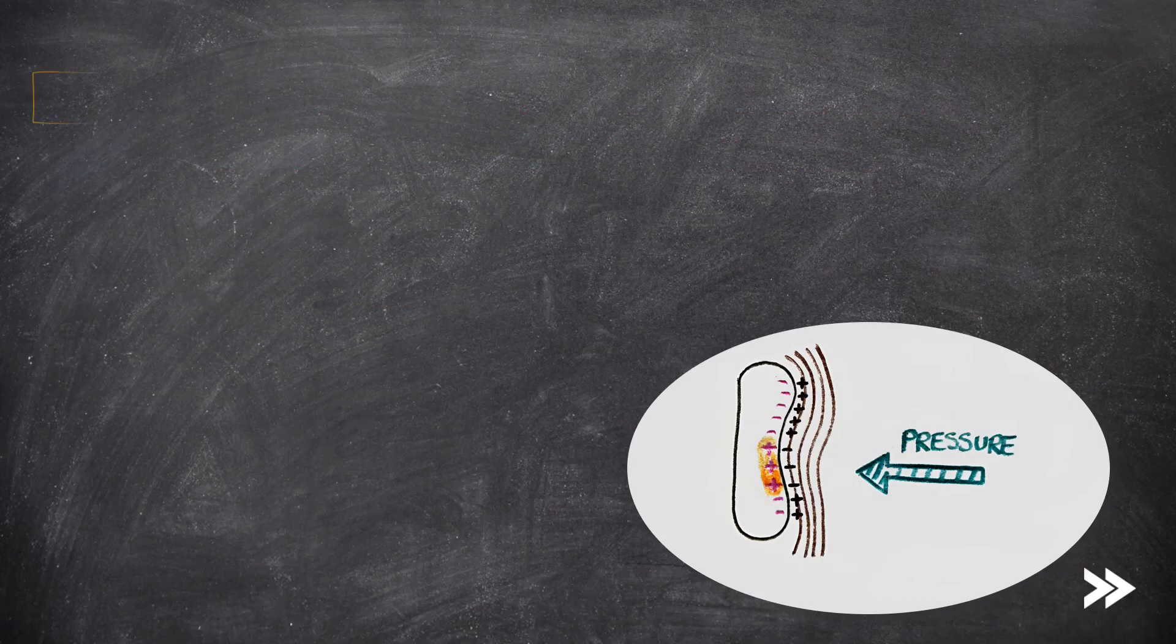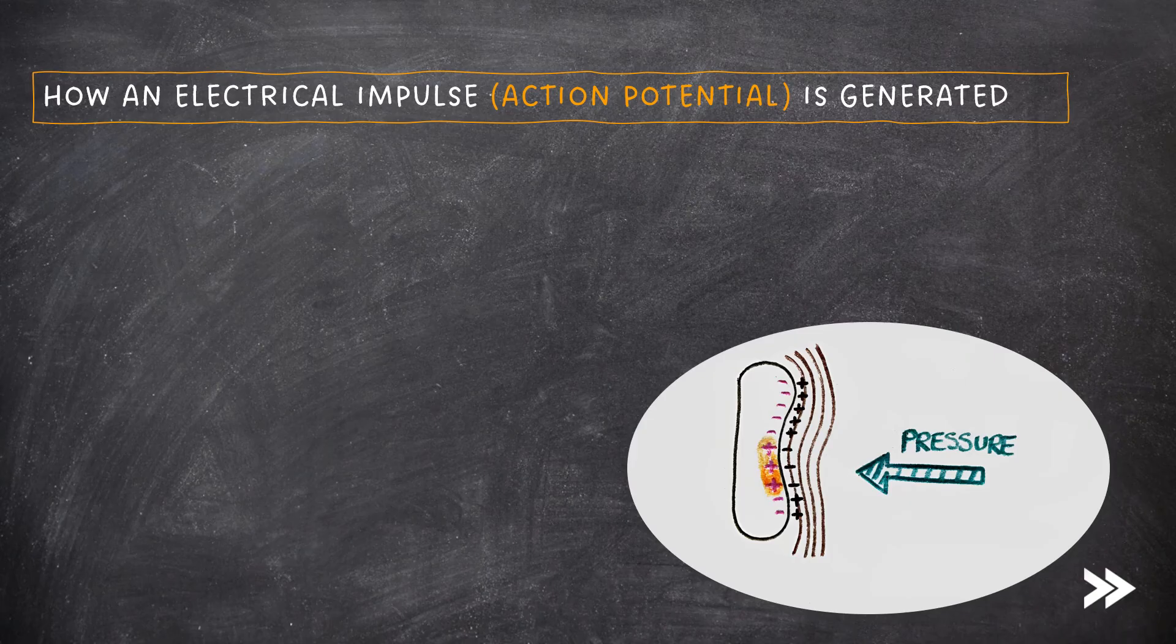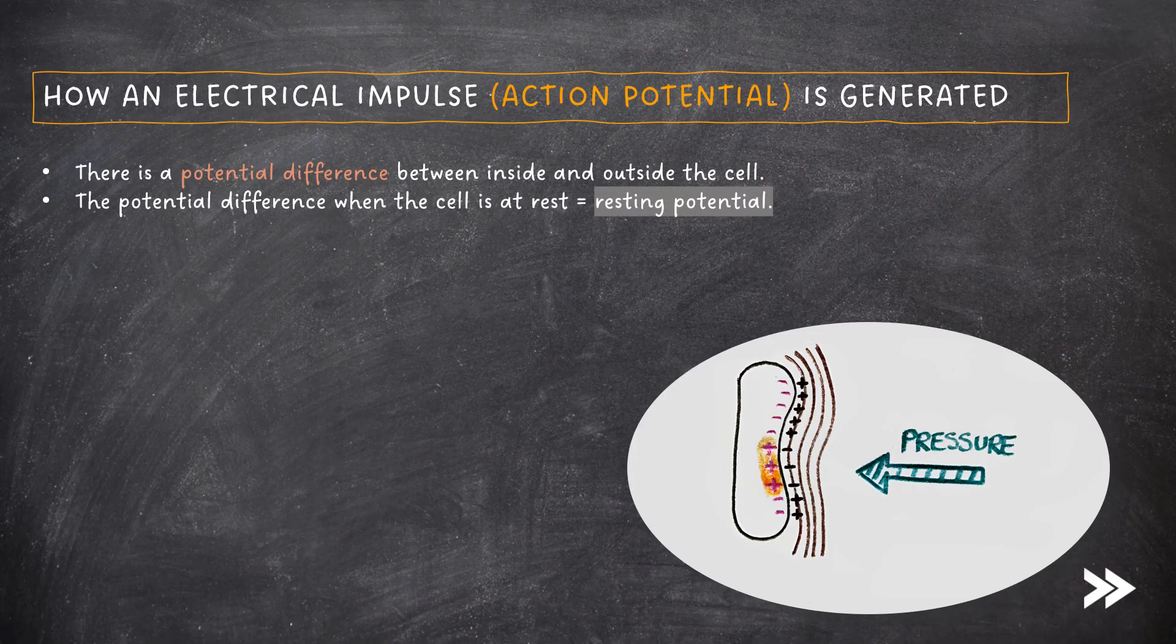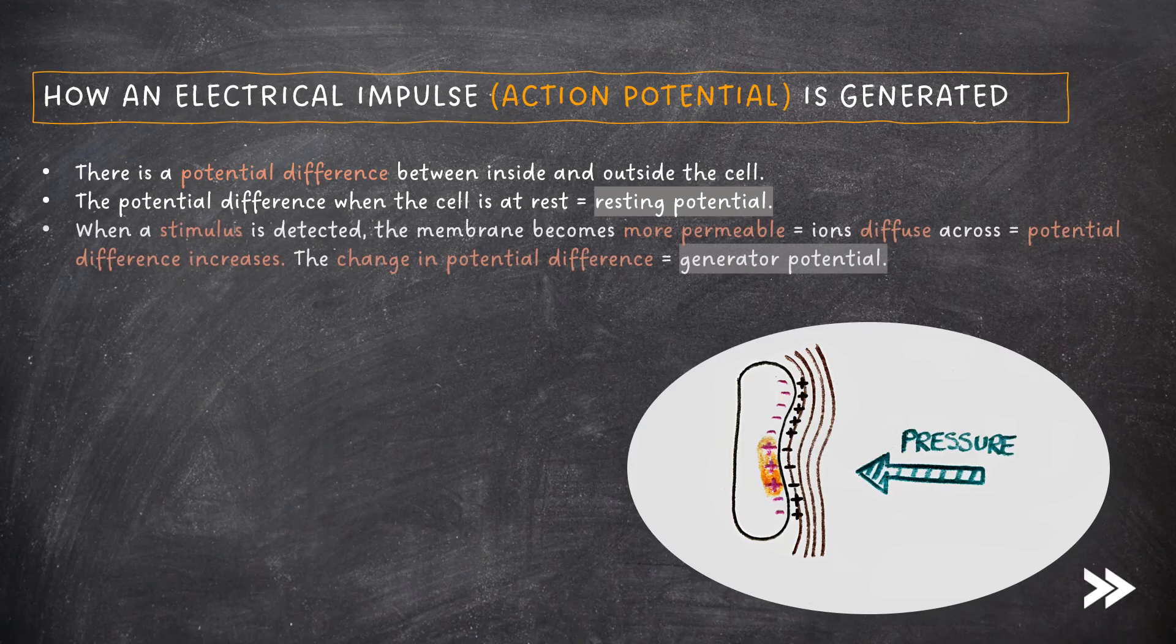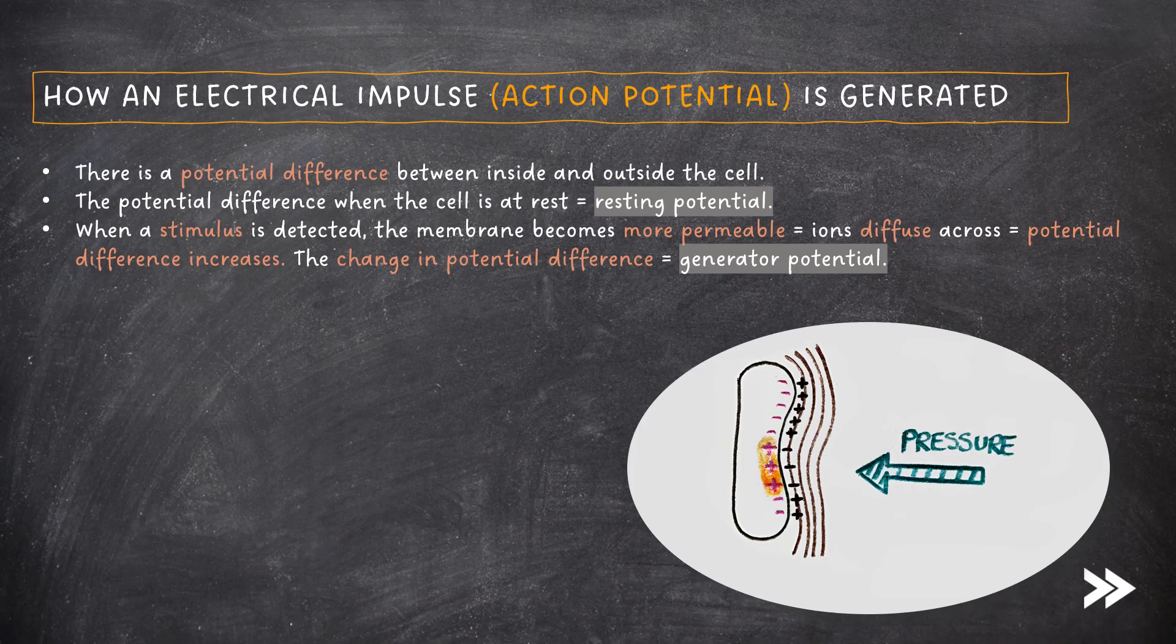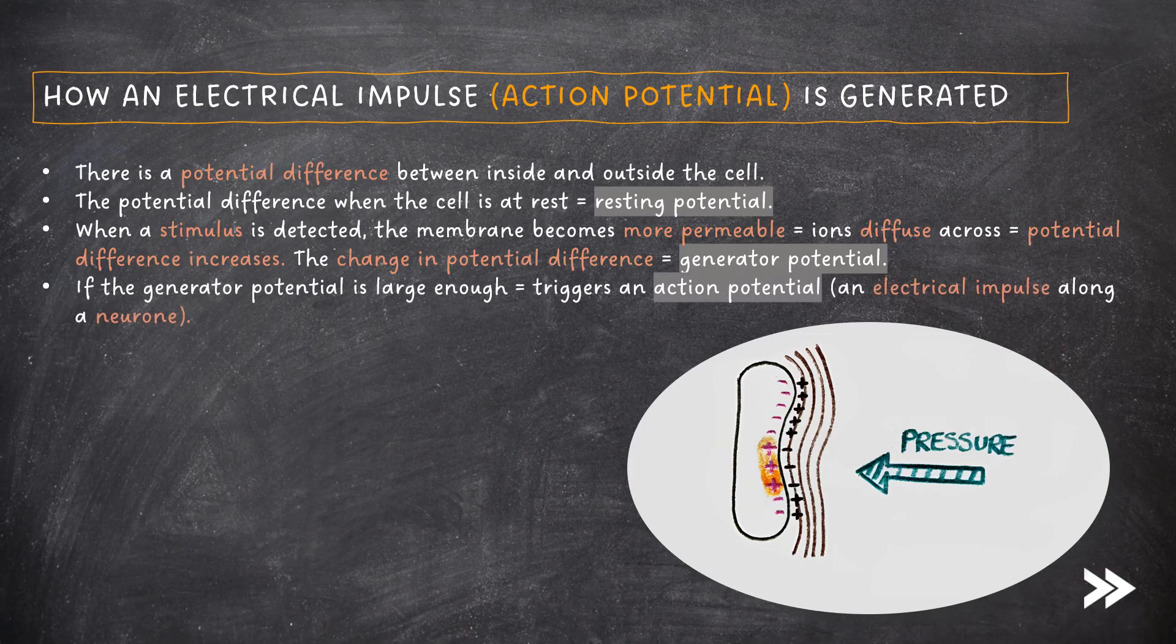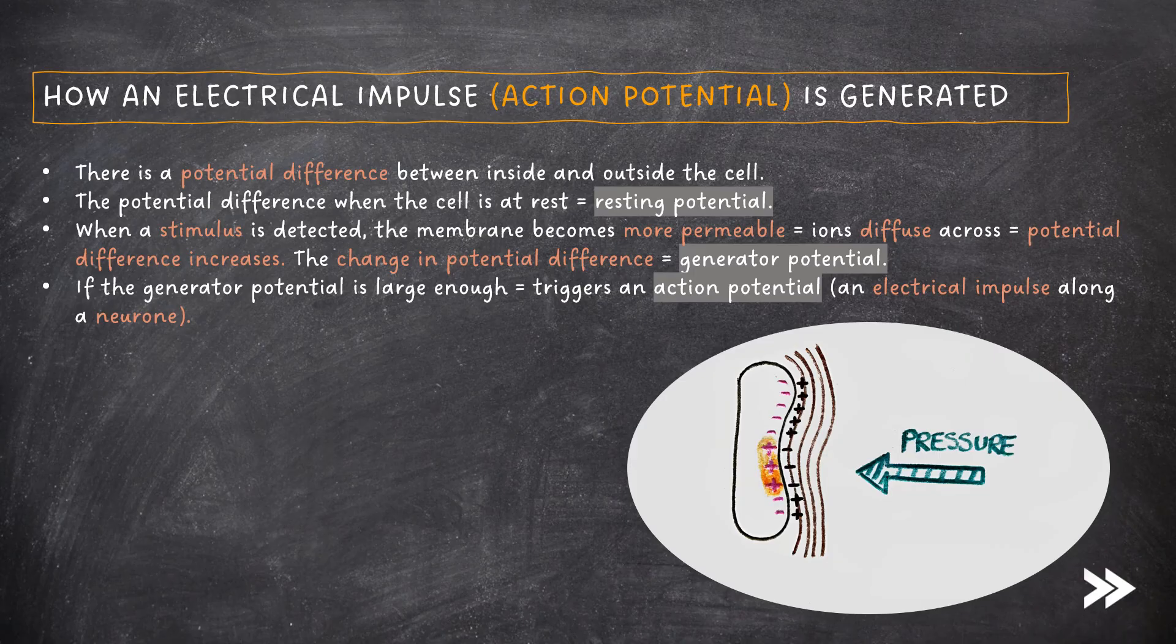So how is an electrical impulse, which is also known as an action potential, actually generated? There is a potential difference between inside and outside the cell. The potential difference when the cell is at rest is known as the resting potential. When a stimulus is detected, the membrane becomes more permeable, allowing ions to diffuse across. The potential difference hereby increases, and this change in potential difference is known as the generator potential. If the generator potential is large enough, an action potential is triggered, which is an electrical impulse along a neuron.